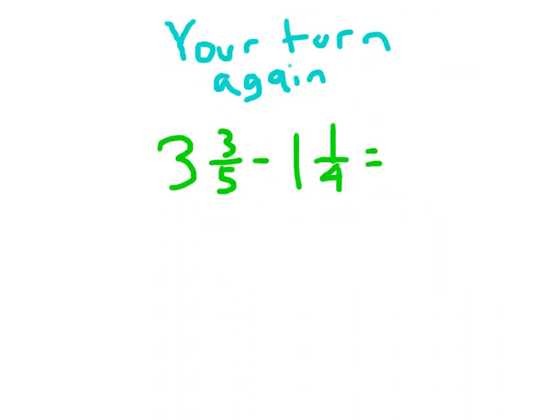In this case with three and three-fifths minus one and one-fourth, you might wonder what common denominator to choose. I'll give you a hint: let's choose twentieths. Go ahead and pause the video and solve this problem.